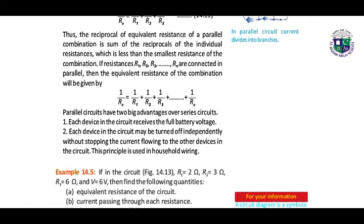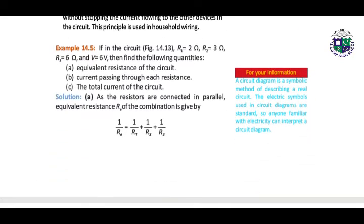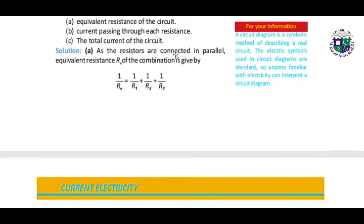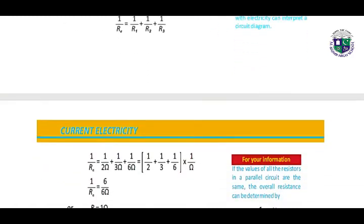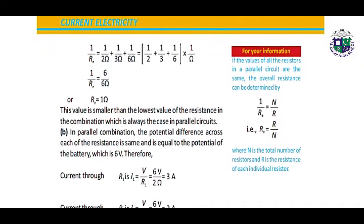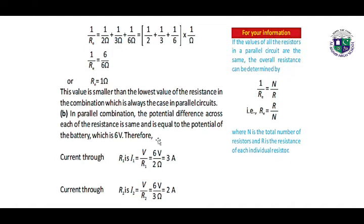Here we have the example. As the resistors are connected in parallel, the equivalent resistance RE of the combination is given by 1 over RE equals 1 over R1 plus 1 over R2 plus 1 over R3. By putting the values in it, we get the equivalent resistance. This value is smaller than the lowest value of resistance in the combination, which is always the case in parallel circuits.